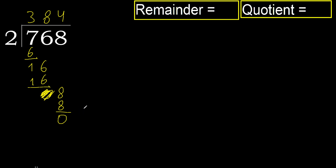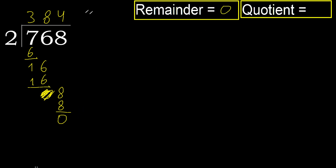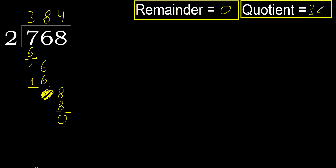There is no next number, therefore we finish. Therefore, 768 divided by 2 is 384.